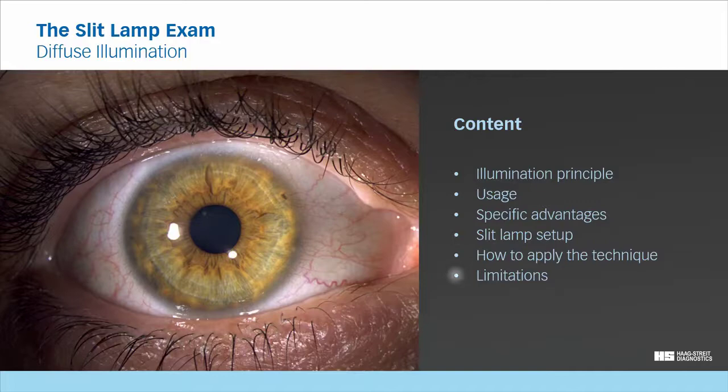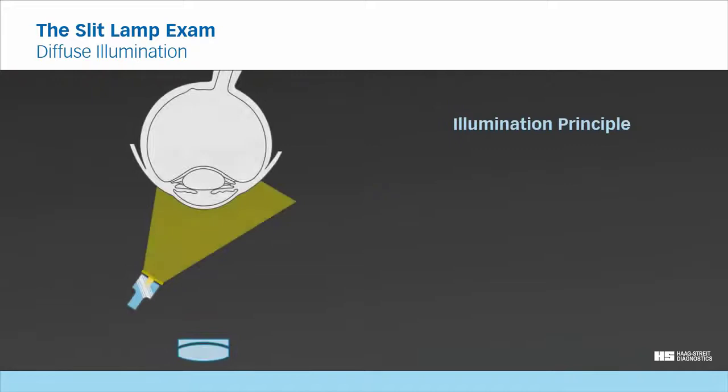Illumination principle. Diffuse illumination is a technique which illuminates the observed field homogeneously. Diffuse illumination can be created either by engaging the diffuser or with a dedicated background illumination.